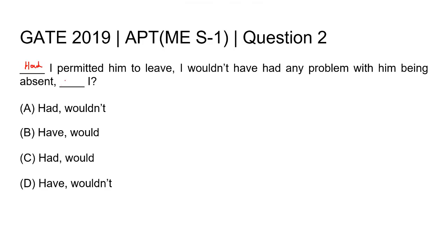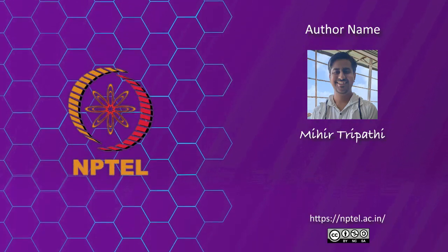In the second blank, we should use the word 'would.' So the statement would be: 'Had I permitted him to leave, I wouldn't have had any problem with him being absent, would I?' The right answer for this question is option C: had, would.